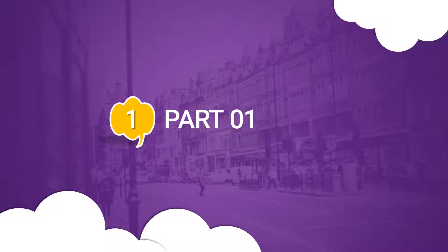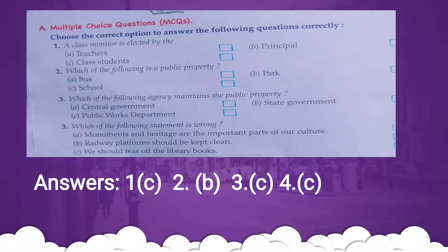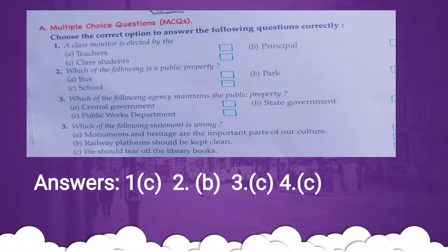Part one: multiple choice questions. Choose the correct option to answer the following questions correctly. With every sentence, three options are given and we have to choose the one correct option. Number one: a class monitor is selected by — options are: teachers, class students, principal.